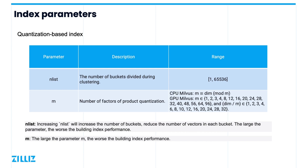In addition to nlist, the IVF-PQ index has the parameter m. This index works by decomposing the original high-dimensional vector space into the Cartesian product of m low-dimensional vector spaces uniformly. When setting the value for m, a larger value results in slower building and querying speeds but better recall accuracy. Setting m will depend on what you want out of your system.